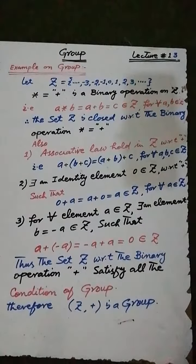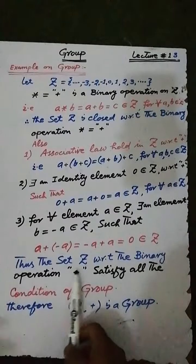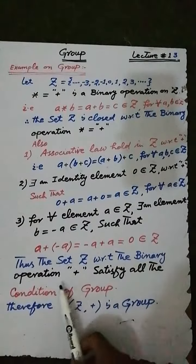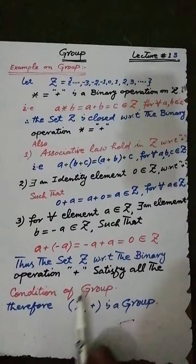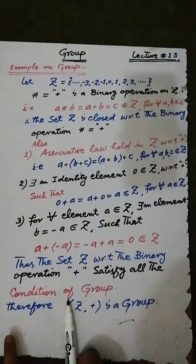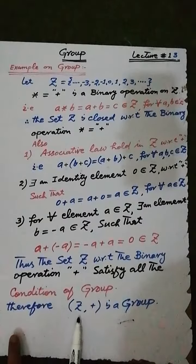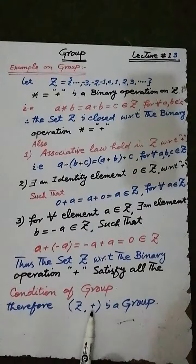The last condition of a group is satisfied. Therefore, we can say that the set z with the binary operation addition satisfies all the conditions of a group. Therefore, the pair (z, +) — that is, z with the binary operation addition — is a group.